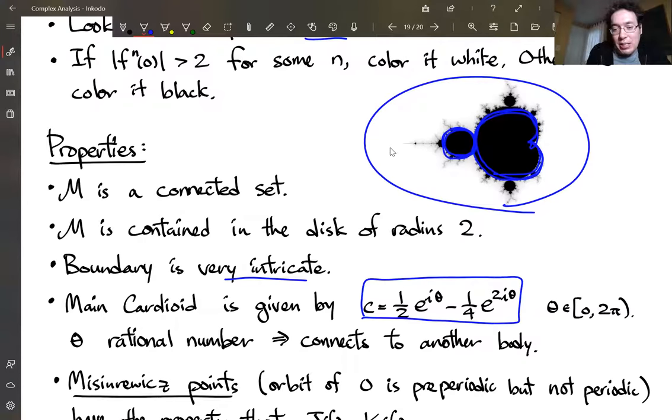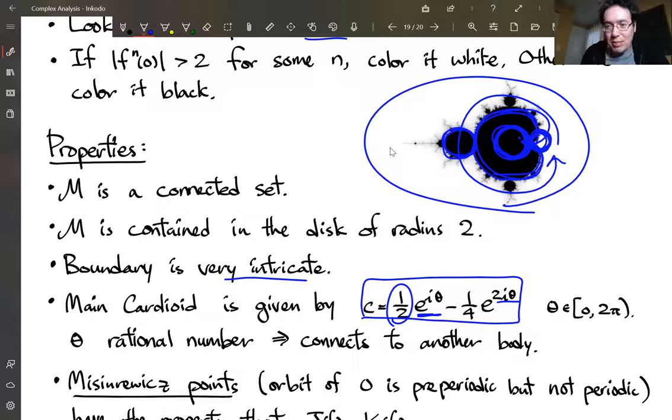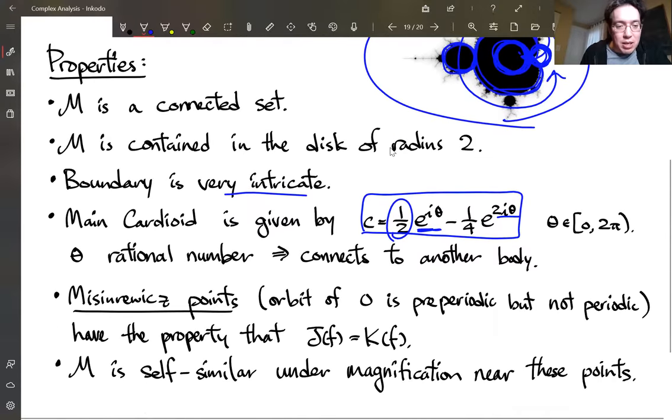You can actually write down the formula for this main cardioid. You could think about it as circle of radius one half going counterclockwise, but you subtract something that's going in twice as quickly, of radius one quarter. So if you kind of imagine a quarter of radius one half and tiny bit, some coin that's a half the radius, and then track one point on this coin as you rotate that around, you might get something like this.